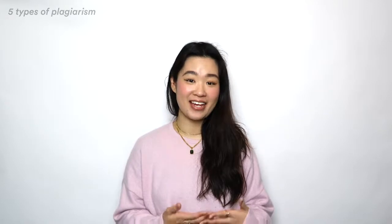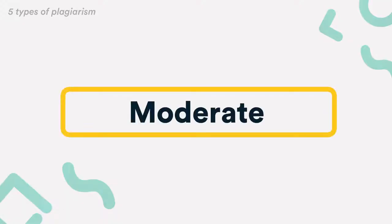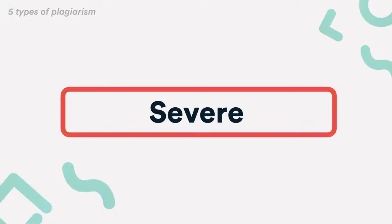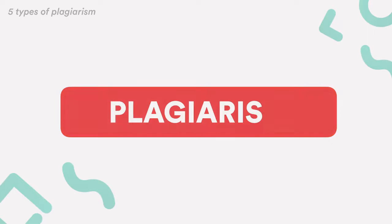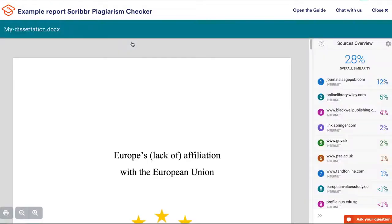Let's talk about five types of plagiarism you might encounter. Although they differ in severity, it's still not acceptable to commit any kind of plagiarism. And plagiarism checkers like Turnitin can detect all of them very easily.